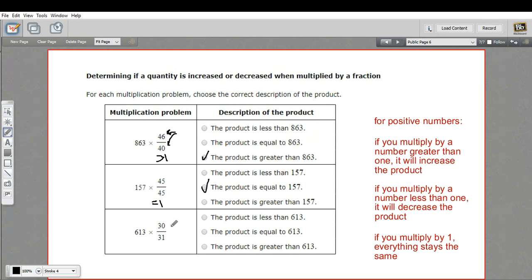Now here, our numerator is less than the denominator. So this is less than one. And when you multiply something by a fraction less than one, it's going to decrease. So the product will be less than 613. That's a little bit of work in how multiplying by fractions that are greater than one or less than one or equal to one affect a product.